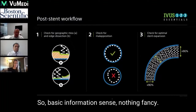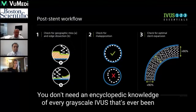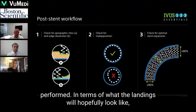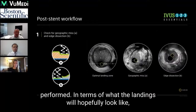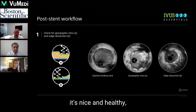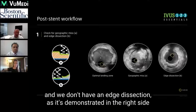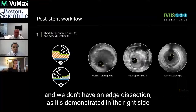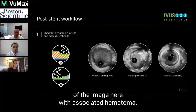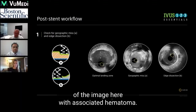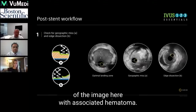Basic information sets — nothing fancy. You don't need an encyclopedic knowledge of every grayscale IVUS that's ever been performed. In terms of what the landing zone hopefully looks like, it's nice and healthy, and we don't have an edge dissection, as is demonstrated in the right-sided image here, with associated hematoma.